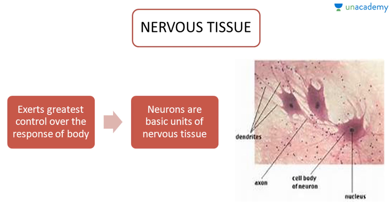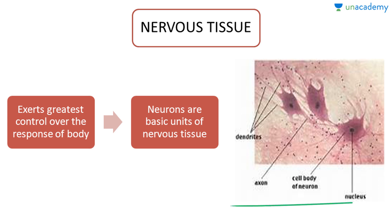Now we will talk about nervous tissue. Nervous tissue exerts the greatest control over the body's responses and is instrumental in the working of our body. Neurons are the basic unit of nervous tissue.